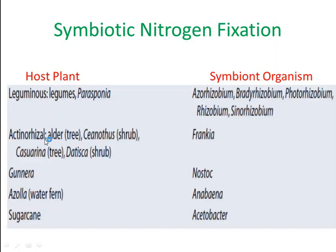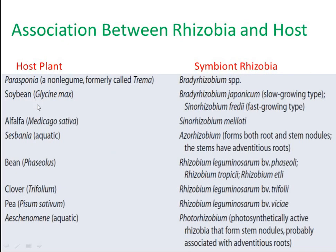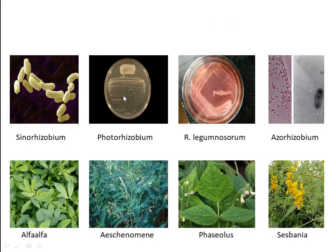The most common type of symbiosis occurs between members of the plant family Leguminosae and soil bacteria of the genera Azorhizobium, Bradyrhizobium, Photorhizobium, Rhizobium, and Sinorhizobium, collectively called rhizobia. Parasponia forms association with Bradyrhizobium, soybean with Bradyrhizobium japonicum, alfalfa with Sinorhizobium meliloti, Sesbania with Azorhizobium, bean with Rhizobium leguminosarum, and Aeschynomene with Photorhizobium.